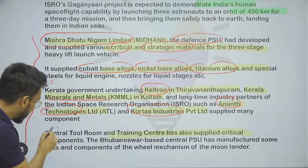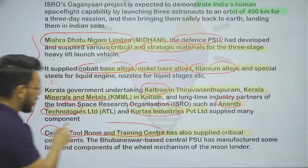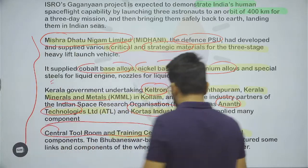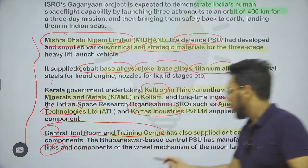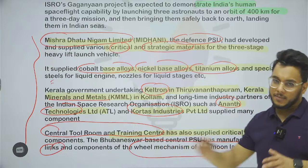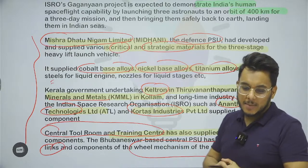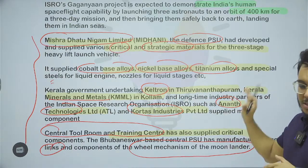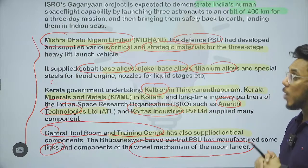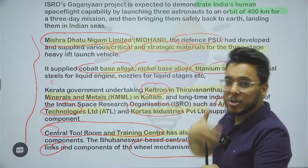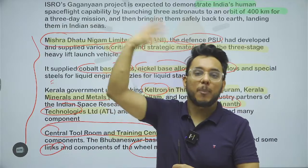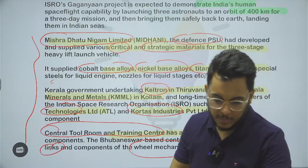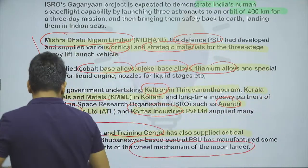Most importantly, the Central Tool Room and Training Centre in Bhubaneswar, Odisha, supplied critical components such as links for the wheel mechanism of the lander — addressing issues from the previous mission. More details will actually be available post the landing on August 23 or 24. That is all about Chandrayaan 3.